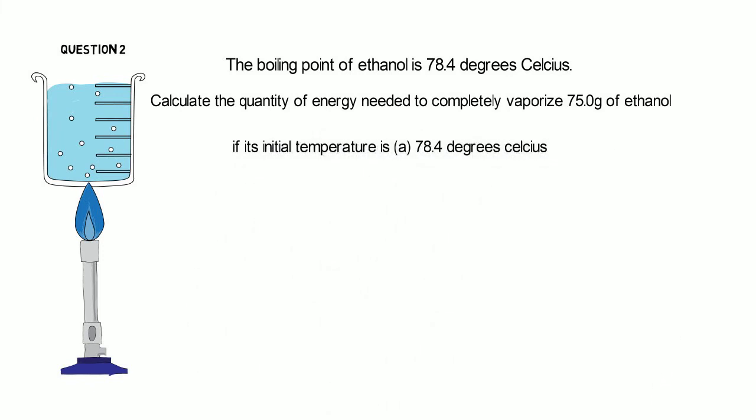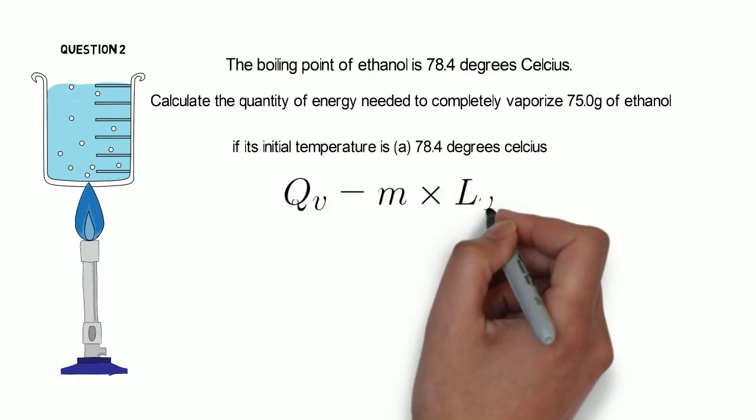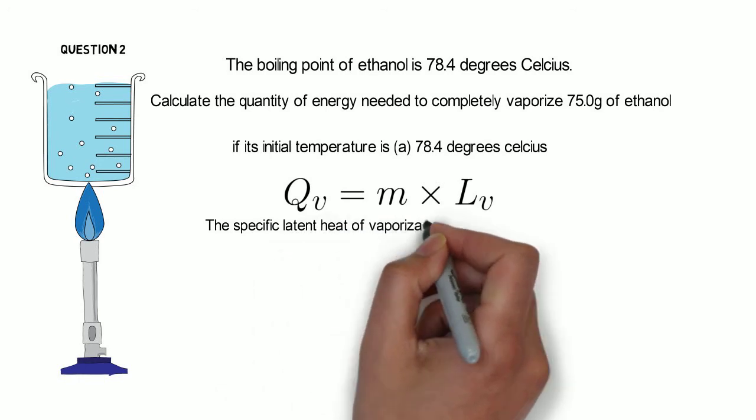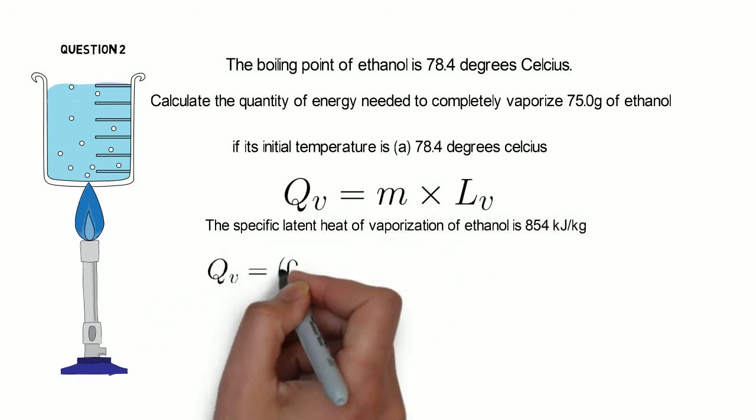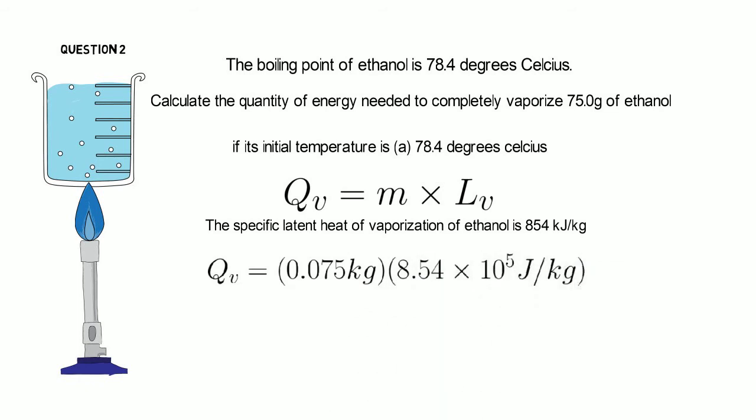In this case, the temperature is already at its boiling point, so we only need to calculate the latent heat of vaporization. The specific latent heat of vaporization of ethanol is given. We simply need to change our units from kilojoules to joules.